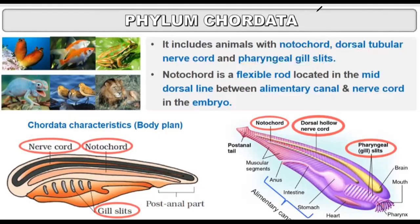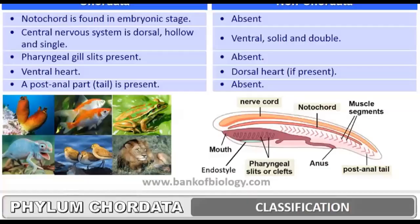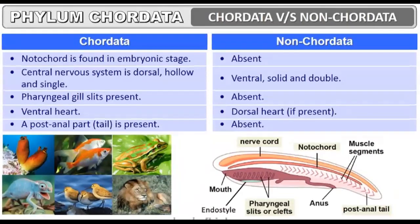The notochord is present in the embryonic stage. It is found in the embryonic stage of chordates, and in non-chordates, the notochord is absent.